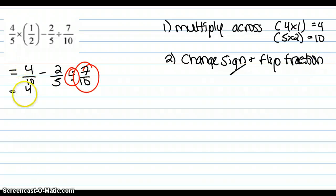So we have 4 over 10 minus 2 over 5 times, change the sign, 10 over 7.